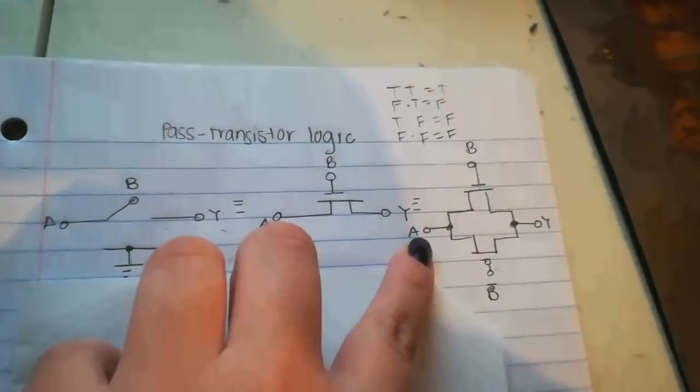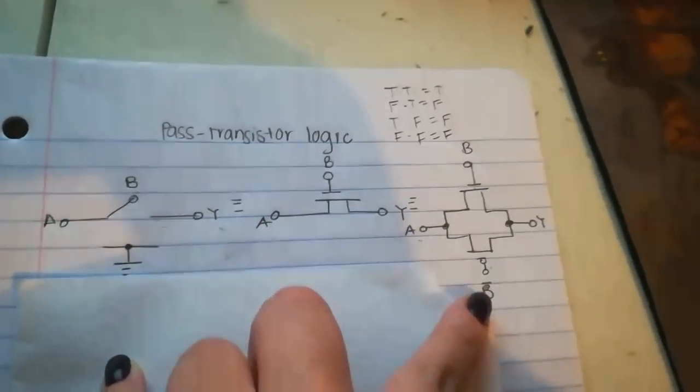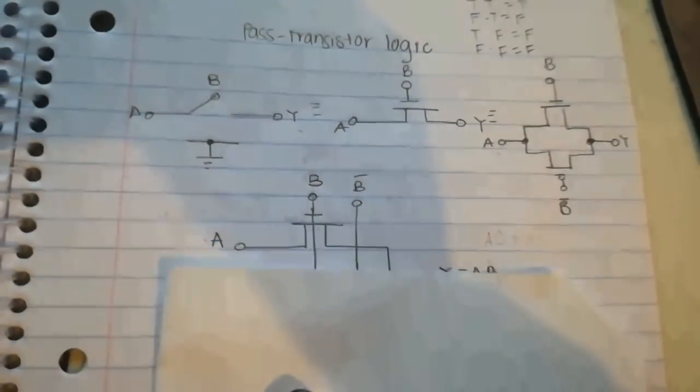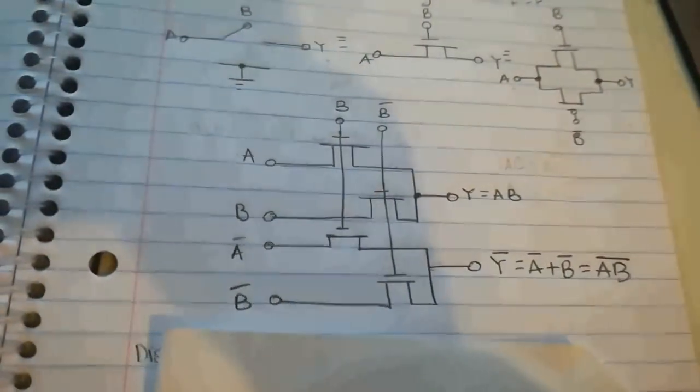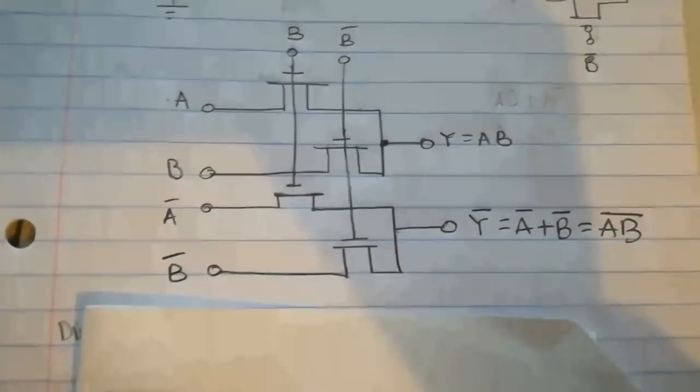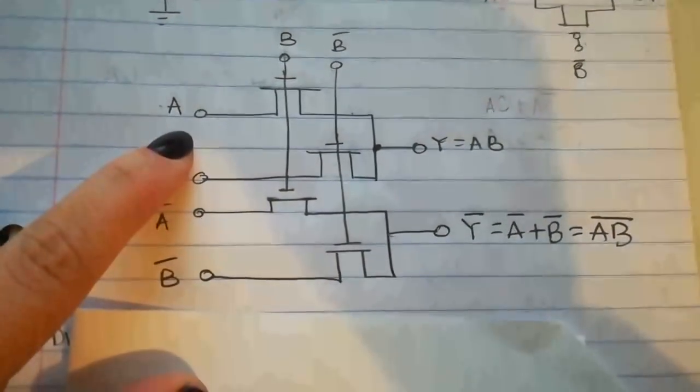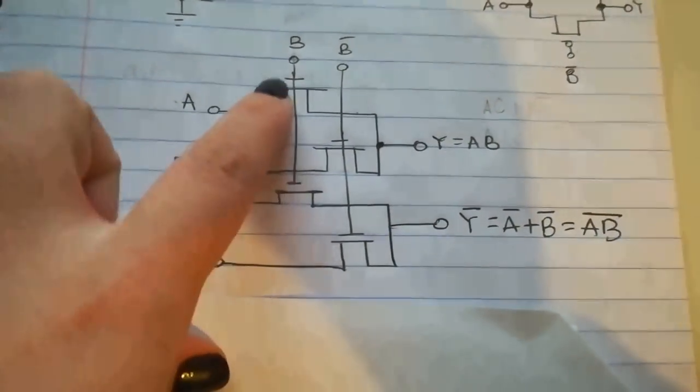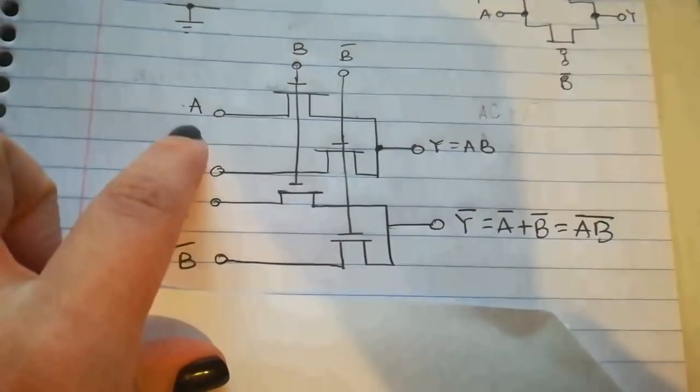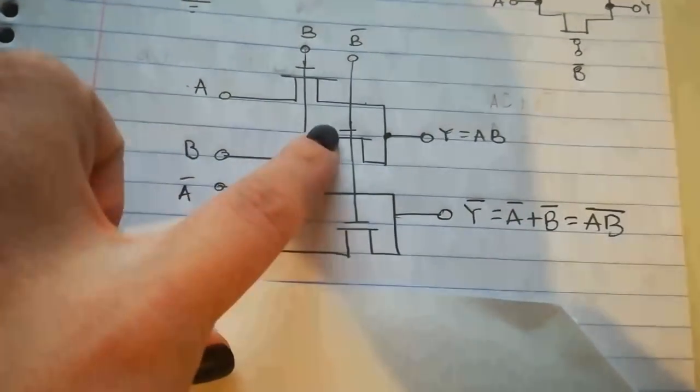So it would be Y equals AB plus AB̄. This sounds kind of confusing, but over here it's a little bit clearer. If you see this schematic that I pulled out of one of his slides, it says that A times B is the same as A and B plus B and B̄.